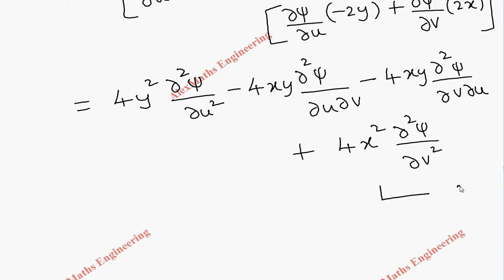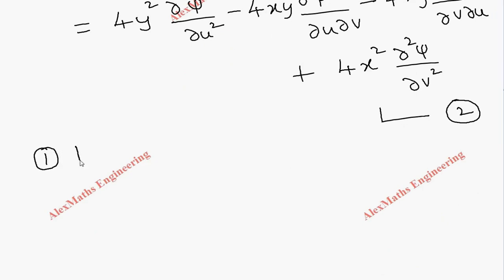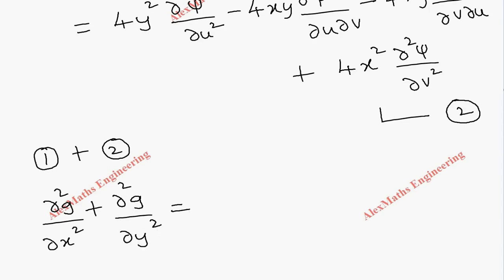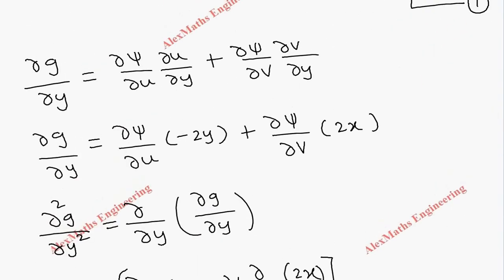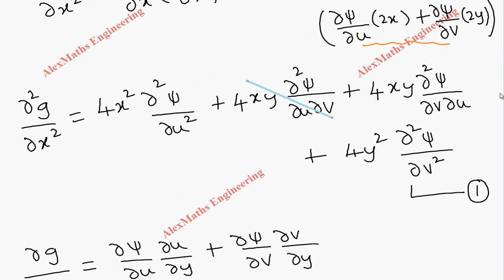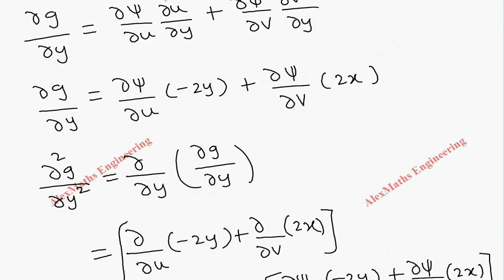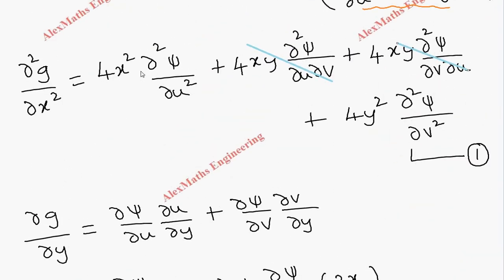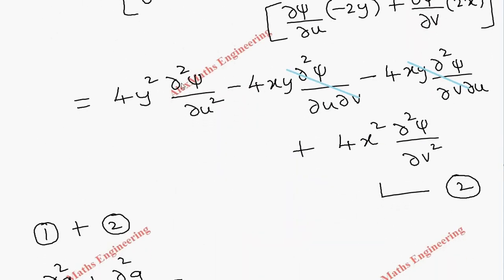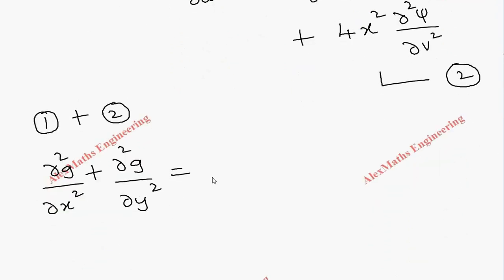Now we add Expression 1 and Expression 2. On the left-hand side we have ∂²g/∂x² + ∂²g/∂y². On the right-hand side, the cross terms cancel: +4xy(∂²ψ/∂u∂v) and -4xy(∂²ψ/∂u∂v) cancel, and similarly the other cross terms cancel. After canceling, we are left with 4x²(∂²ψ/∂u²) and 4y²(∂²ψ/∂u²).